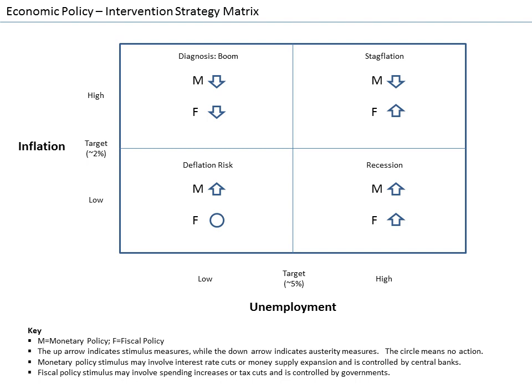There is a multiplier effect that boosts the impact of government spending. For instance, when the government pays for a bridge, the project not only adds the value of the bridge to output, but also allows the bridge workers to increase their consumption and investment, which helps to close the output gap. The effects of fiscal policy can be limited by crowding out. When the government takes on spending projects, it limits the amount of resources available for the private sector to use.